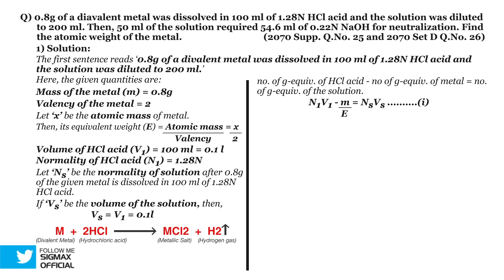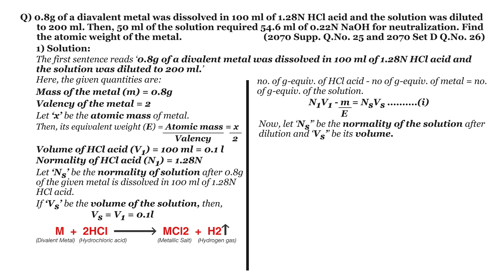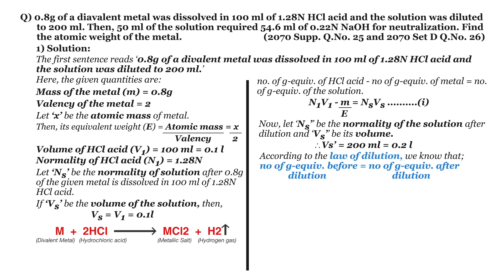Since the solution is diluted to 200 ml, its normality changes. Let Ns' be the normality after dilution and Vs' be its volume, so Vs' equals 200 ml or 0.2 liter. We don't know its normality, so we apply the law of dilution. According to the law of dilution, the number of gram equivalents before dilution equals the number of gram equivalents after dilution.